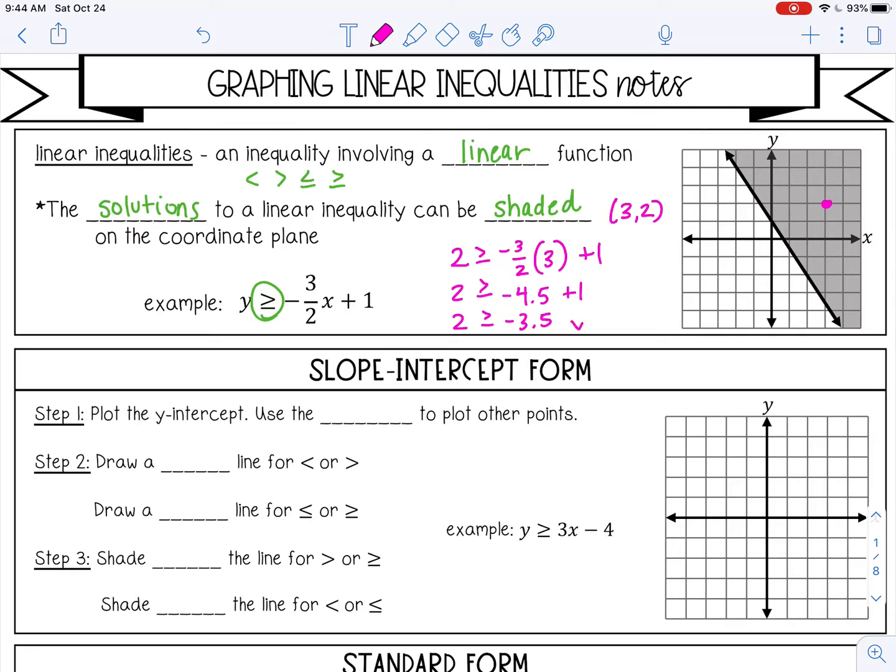Two is greater than or equal to negative 3.5. That's definitely true. A positive number is greater than a negative number. This will work for any point you pick in this shaded region, and it continues on. It's not just within the boundaries of this coordinate plane; it continues on forever.